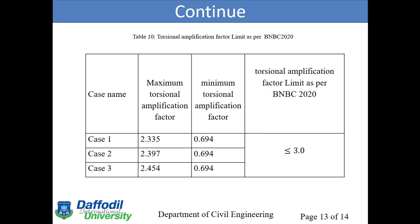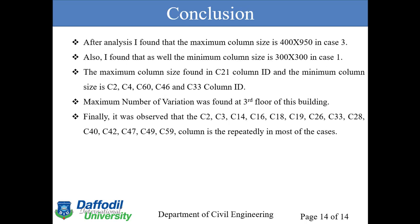In conclusion, after analyzing, I found that the maximum column size is 400×950 in case 3, because a column was removed at that floor. The minimum column size is 300×300, which was the assumed starting size in case 1. Different column sections were found by considering the load. The minimum column size was found at column ID C21, and additional critical column IDs include C2, C4, C64, C63, and columns 14, 16, 18, 19, 26, 33, 28, 40, 42, 47, 49, and 59, which appear repeatedly across most cases.